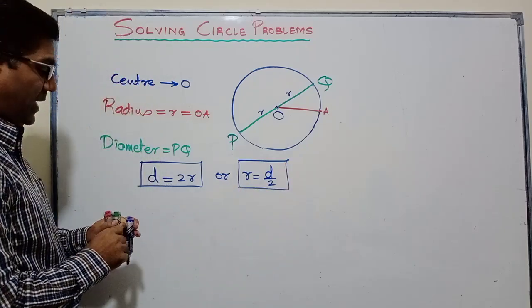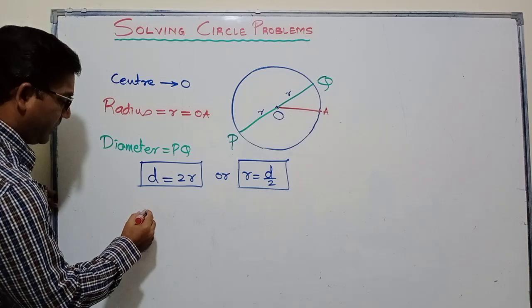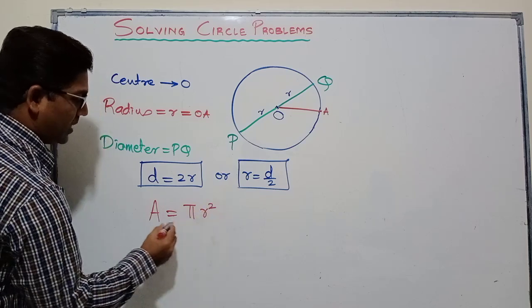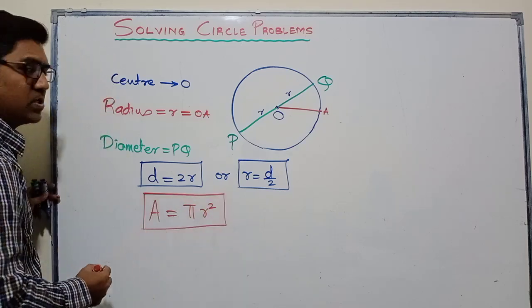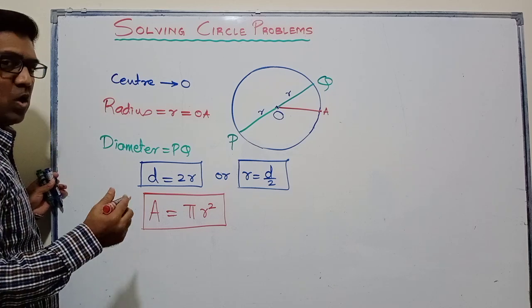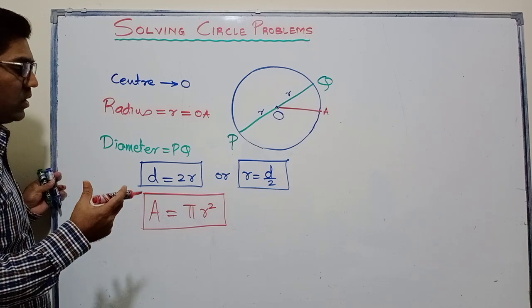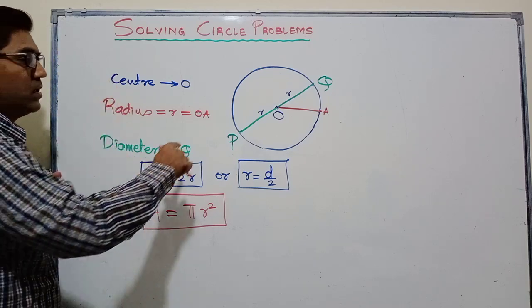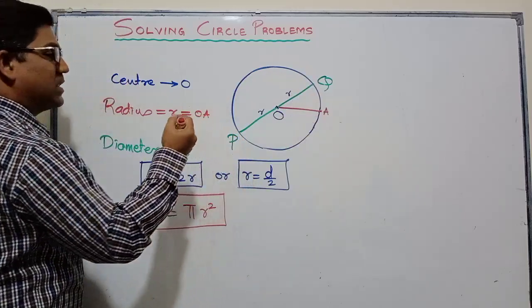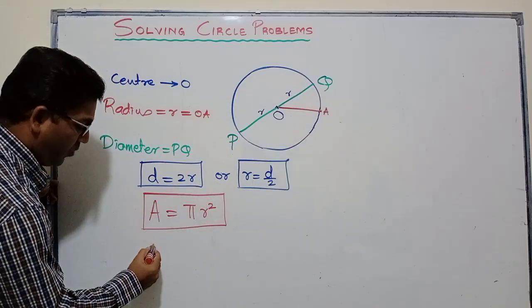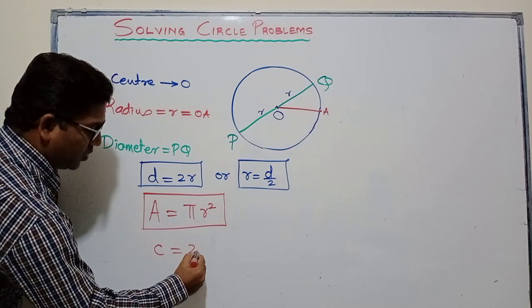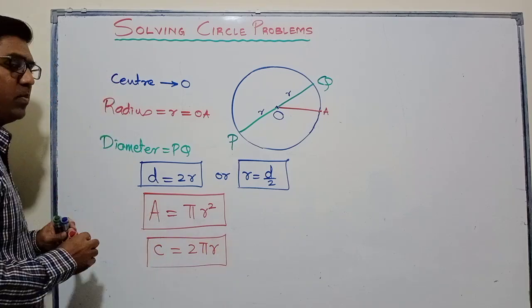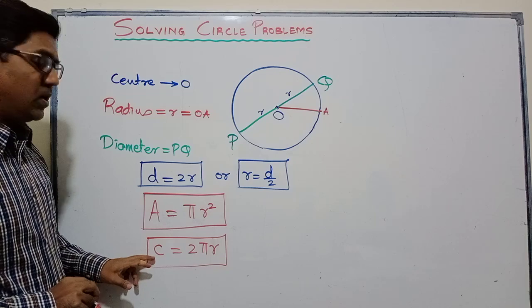To find the area of the circle, the formula is πr², where π is a constant whose approximate value is 3.142, or we will use the calculator value for a more accurate answer. The perimeter of the circle has a special name — circumference — and the formula for circumference is 2πr. So area formula is πr² and circumference formula is 2πr.